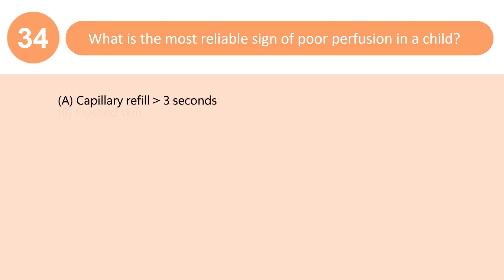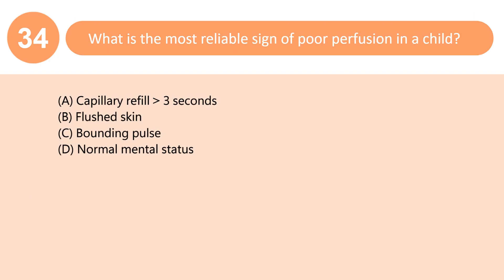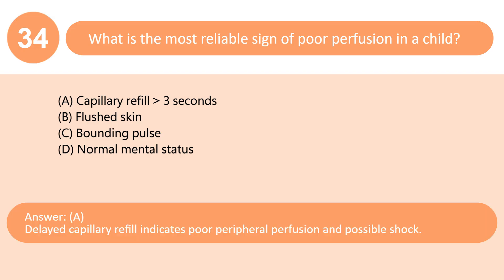What is the most reliable sign of poor perfusion in a child? A. Capillary refill greater than 3 seconds. B. Flushed skin. C. Bounding pulse. D. Normal mental status. Answer: A. Delayed capillary refill indicates poor peripheral perfusion and possible shock.